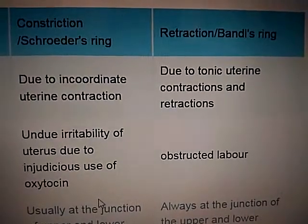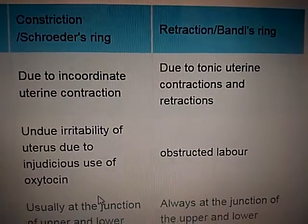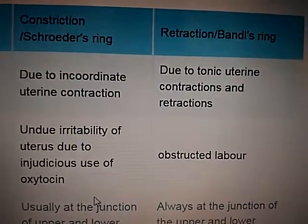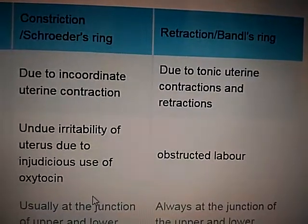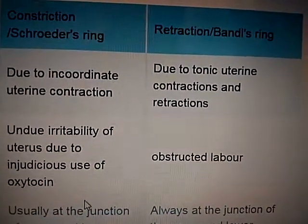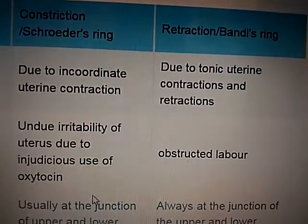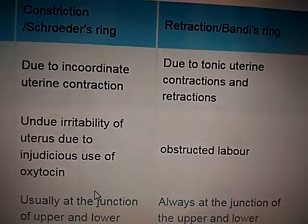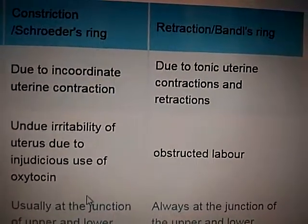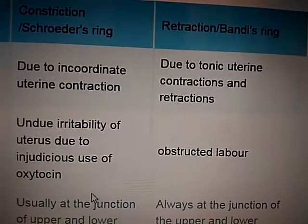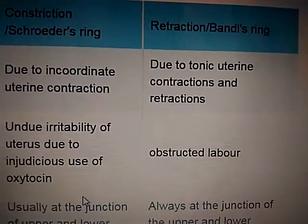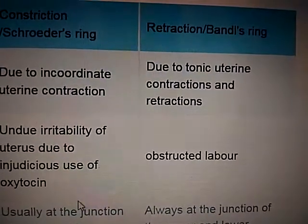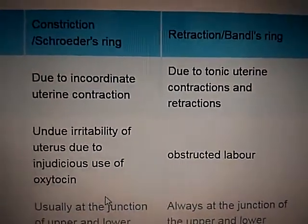The cause of the constriction ring is undue irritability of the uterus due to injudicious use of oxytocin. So if oxytocin is not used properly, the constriction ring or Schroeder's ring is formed. The retraction ring or Bandl's ring, on the other hand, is caused by obstructed labour.